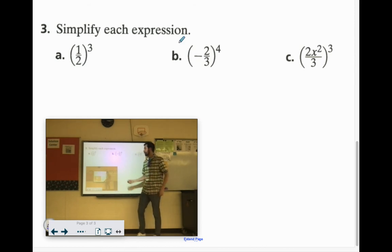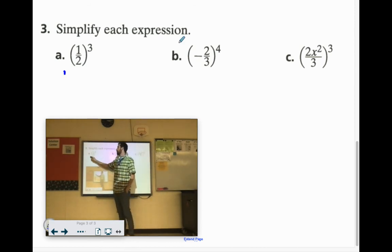So 1 half to the 3rd power. You have to give that 3rd power to each of those. 1 to any power is just going to be 1. 2 to the 3rd, 2 times 2 is 4, times 2 is 8. So 1 eighth.